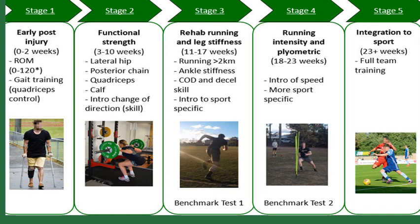Stage three runs from 11 to 17 weeks and is called the rehab running and leg stiffness stage. We restart lunges and side steps, ask the patient to do flutter-style swimming strokes, and encourage aqua rehabilitation. We also address any ankle stiffness with stretching exercises and begin sports-specific training. Stage four, from 18 to 23 weeks, involves progressive running, general plyometrics, dynamic stabilization, agility training, and functional training.